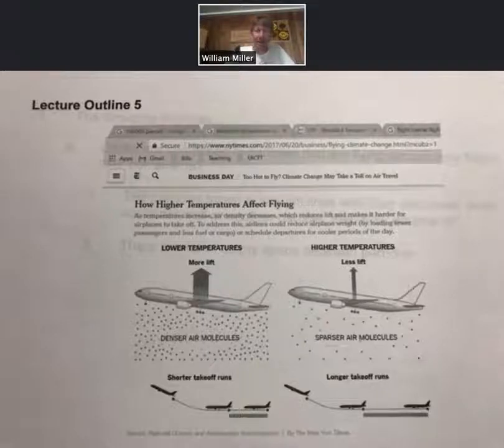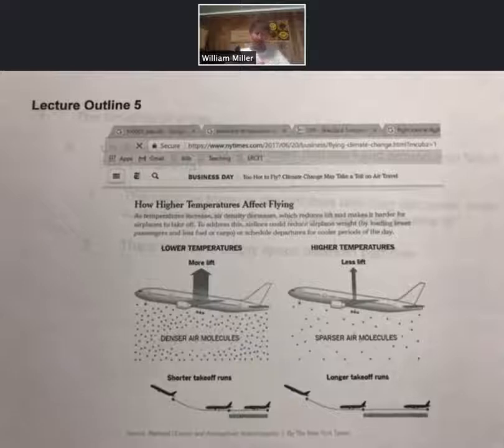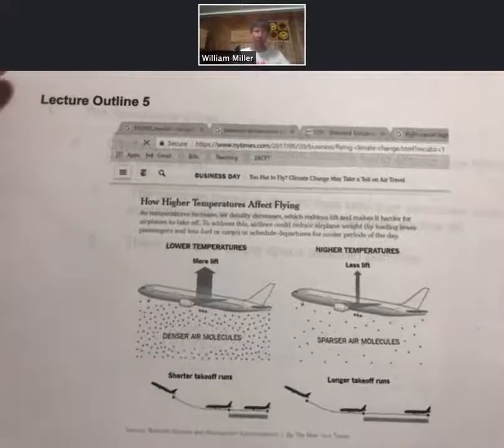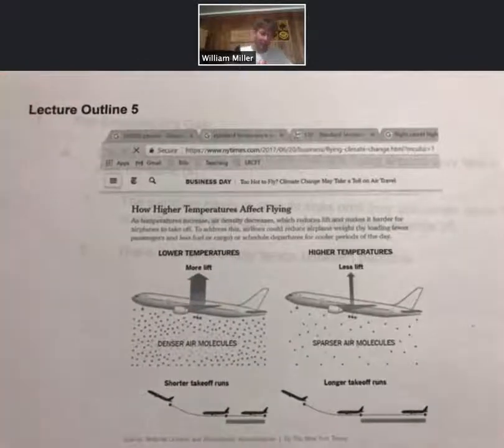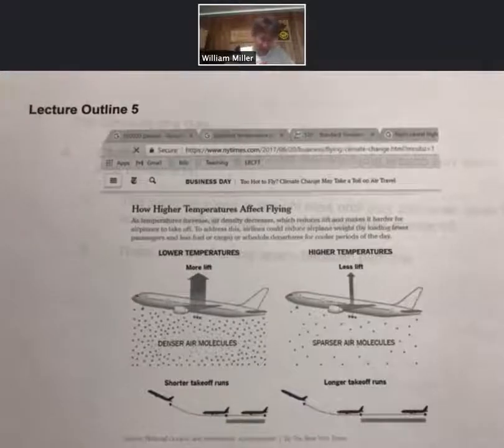Lecture outline five. This is a lecture outline entirely about gases in the gas phase, and we're going to start with an example from an article I pulled from the New York Times about how higher temperatures affect flying of airplanes.